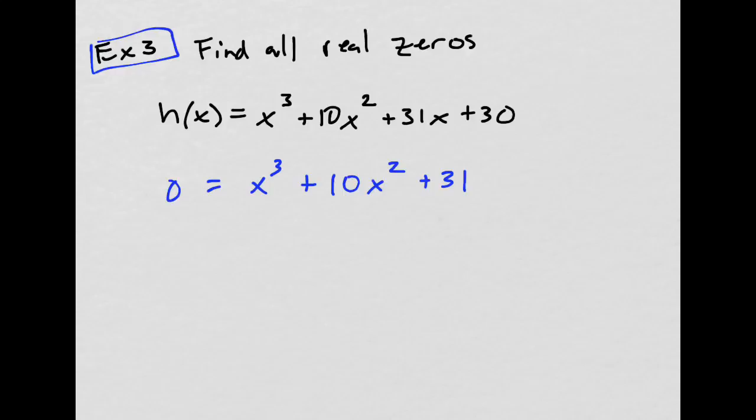And then I'm gonna write down my p's and q's and my combinations of those. So that's what I'm gonna do next. The factors of 30 are just plus or minus 1, plus or minus 2, plus or minus 3, yes, plus or minus 5, plus or minus 6.